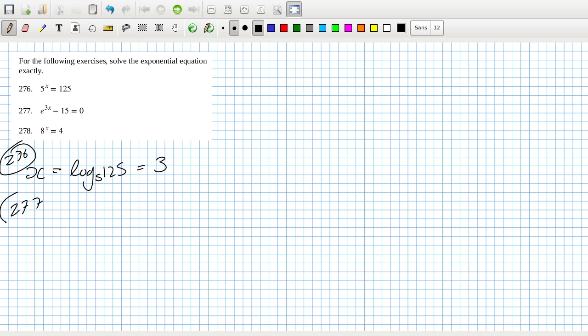Then 277, I can say e power 3x equals 15, ln both sides, bring the 3x down. Ln of e is one, so I get x is one third log 15, possibly how they left the answer. Let's have a look. Yep.